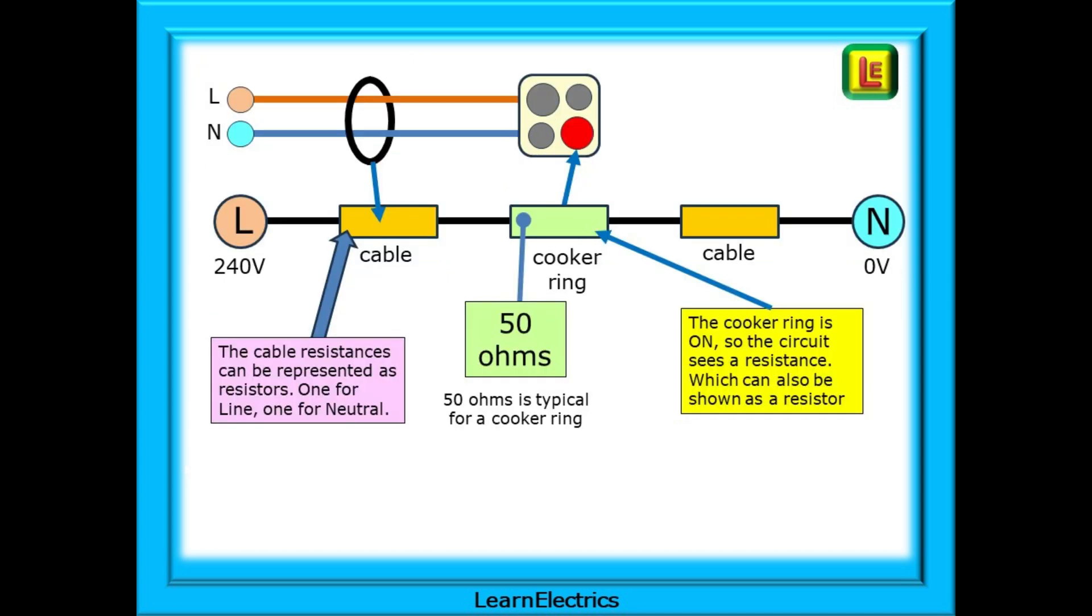The cable resistances can be represented as resistors. One for line, one for neutral. The cooker ring is shown as on, so the circuit sees a resistance which can also be shown as a resistor. And 50 ohms, as used in our examples, is typical for a cooker ring.